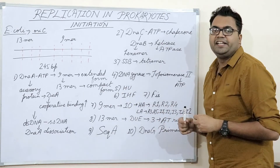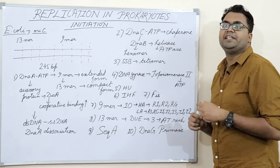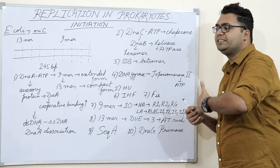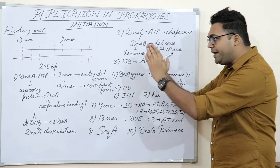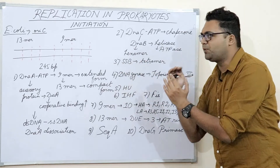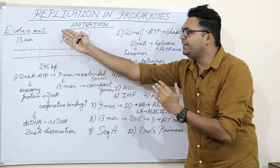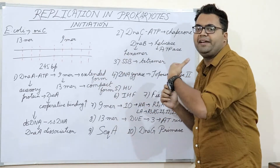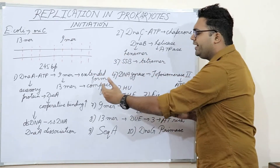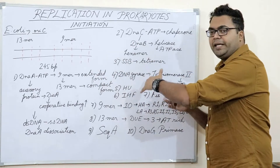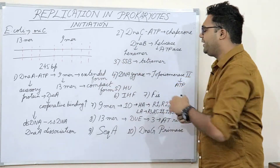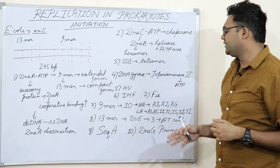There is also a specific protein known as HU — a histone-like protein. HU protein is responsible for bending the DNA so that the conformation is proper for DnaA to access and to make it suitable for the transition from extended to compact conformation.